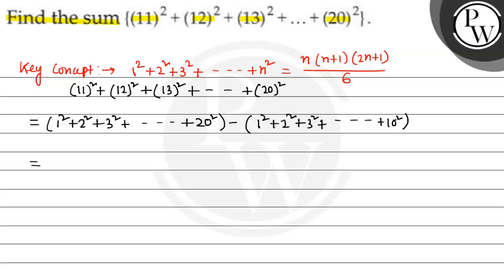So, 20 plus 1. This one is equal to 41. 20 into 41 divided by 6 minus. This one 10 terms is there, so 10 multiplied with 11 multiplied with 21 divided by 6.